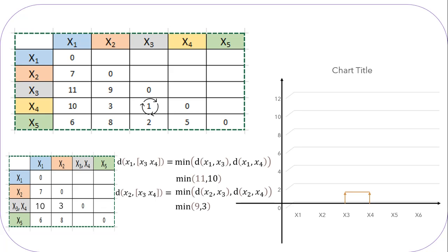For the distance from cluster x3-x4 to x5, we check distance from x3 to x5, which is 2, and distance from x4 to x5, which is 5. The minimum between 2 and 5 is 2, so the distance from cluster x3-x4 to x5 will be 2. Our matrix table is now complete. We will again check the least value in the table and repeat the steps.